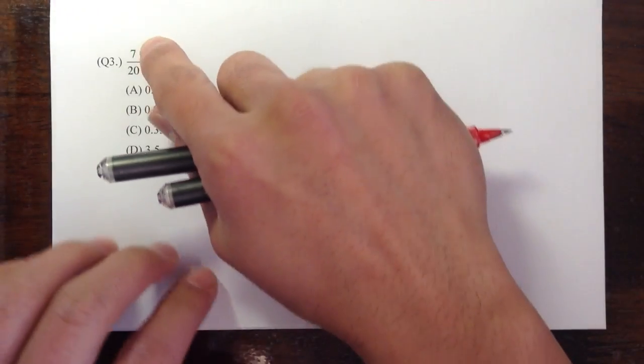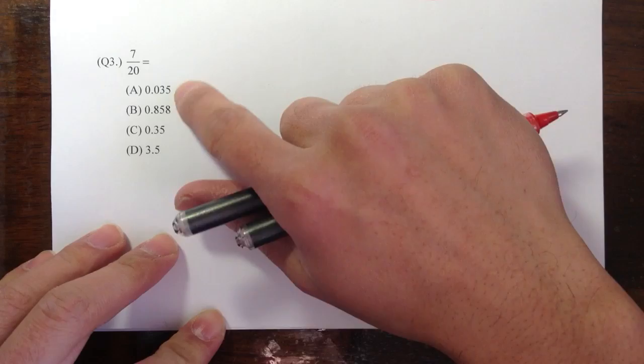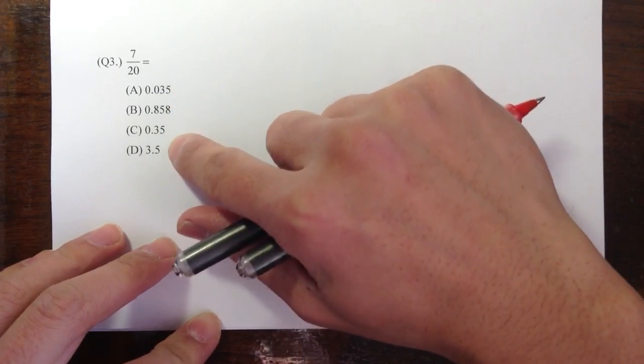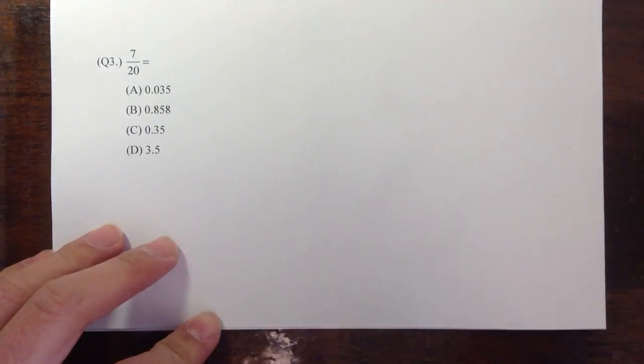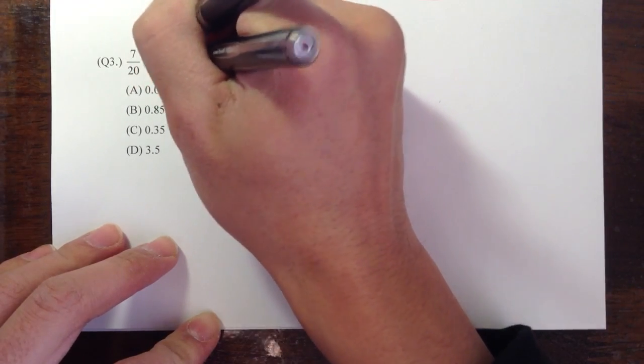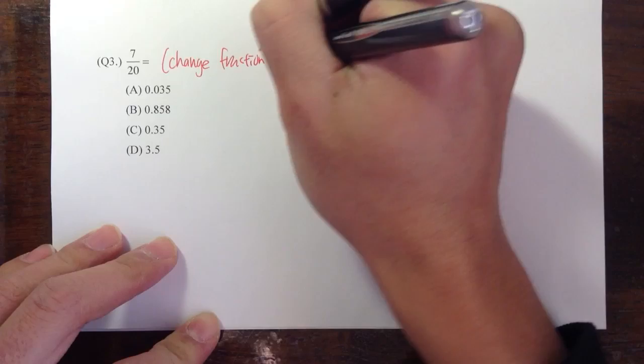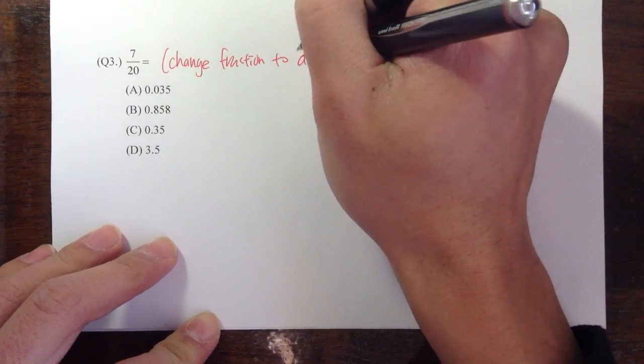For question number three, you start off with a fraction, 7 over 20, and notice that the answer choices are in decimals. So what we're going to do in this question is to change fractions to decimals.